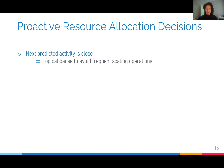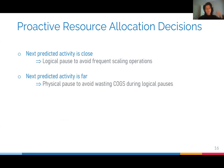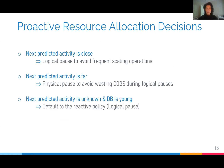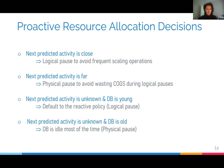There are four possible proactive resource allocation decisions. If the next predicted activity is known to be close, we logically pause the database to avoid the overhead of frequent scaling operations. If the next predicted activity is far, we physically pause the database to avoid wasting costs during logical pauses. If the next predicted activity is unknown and the database is young, there is not enough history for reliable prediction, so we default to the reactive policy and logically pause the database. Lastly, if the next predicted activity is unknown and the database is old, we assume it is idle most of the time and physically pause it to reuse resources.